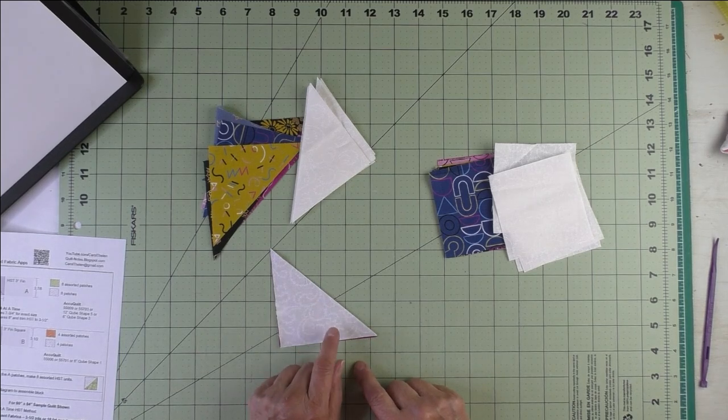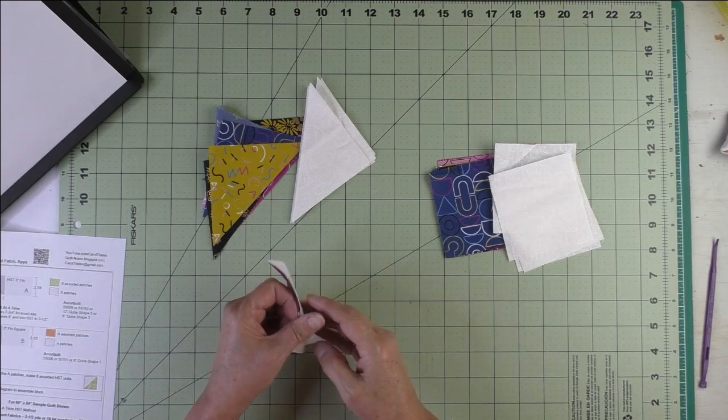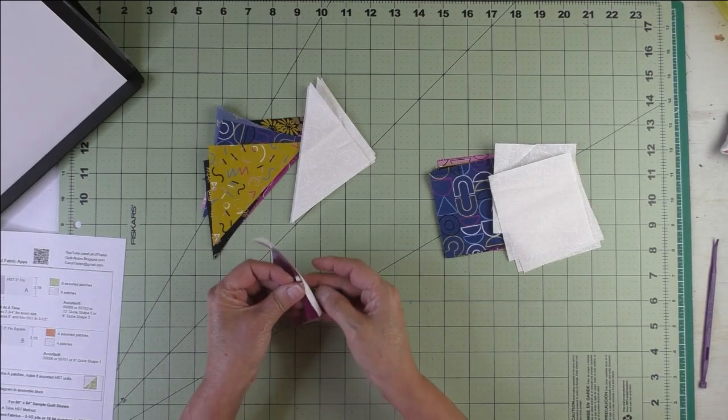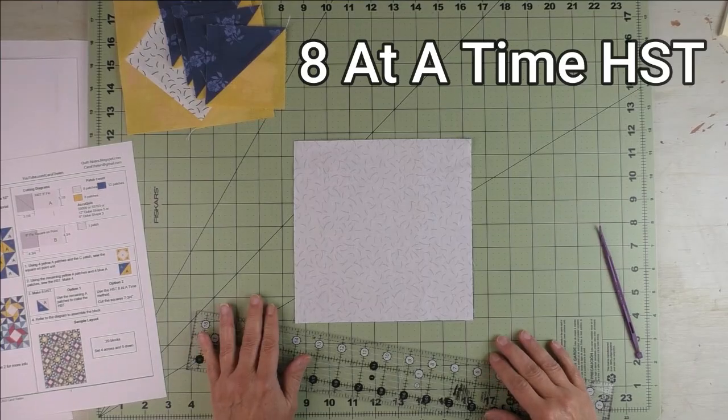With this you'll have little nubs to cut off afterward. But if you're not familiar with the eight at a time half square triangle method, stay tuned for a short tutorial that shows you how.